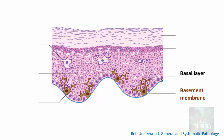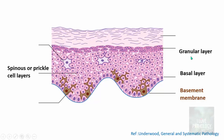The basal cells differentiate into the cells of the upper epidermis, including the spinous or prickle cell layer, also called stratum spinosum. Each cell of the stratum spinosum is adhered to one another by desmosomes, which show interdigitating spinous processes — hence the name. The third layer is the granular layer, which contains variable-sized keratohyaline granules. The last layers are the keratin layers: stratum corneum and stratum lucidum, showing basket-weave type keratin.